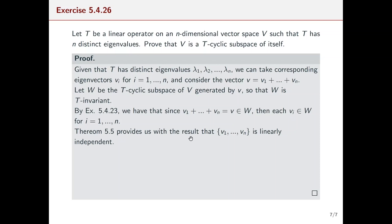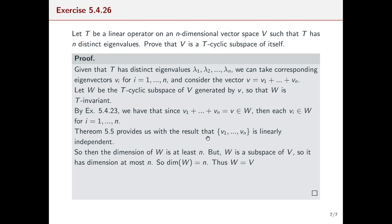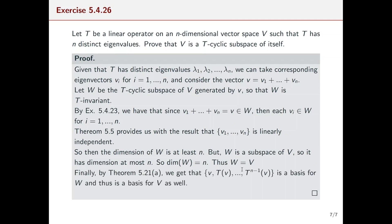Theorem 5.5 gives us that the union of these linearly independent sets of eigenvectors is also linearly independent. So the dimension of W, which contains the span of at least these n eigenvectors, is at least n. But since W is a subspace of V, it has dimension at most n. Therefore the dimension of W must be exactly n, meaning W equals the whole space V. By our theorem, the set {v, T(v), …, T^(n−1)(v)} is a basis for W, and since W equals V, it is also a basis for V. Thus V is a T-cyclic subspace of itself.